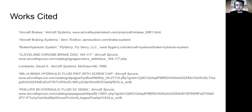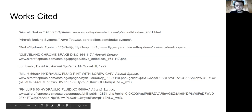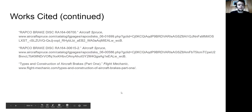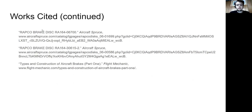Additional sources include a hydraulic fluid picture and a Phillips 66 hydraulic fluid can from aircraftspruce.com, another brake disc picture from aircraftspruce.com, a chrome brake disc picture from aircraftspruce.com, and an article called Types and Construction of Aircraft Brakes Part 1 by Flight Mechanic at flightmechanic.com.